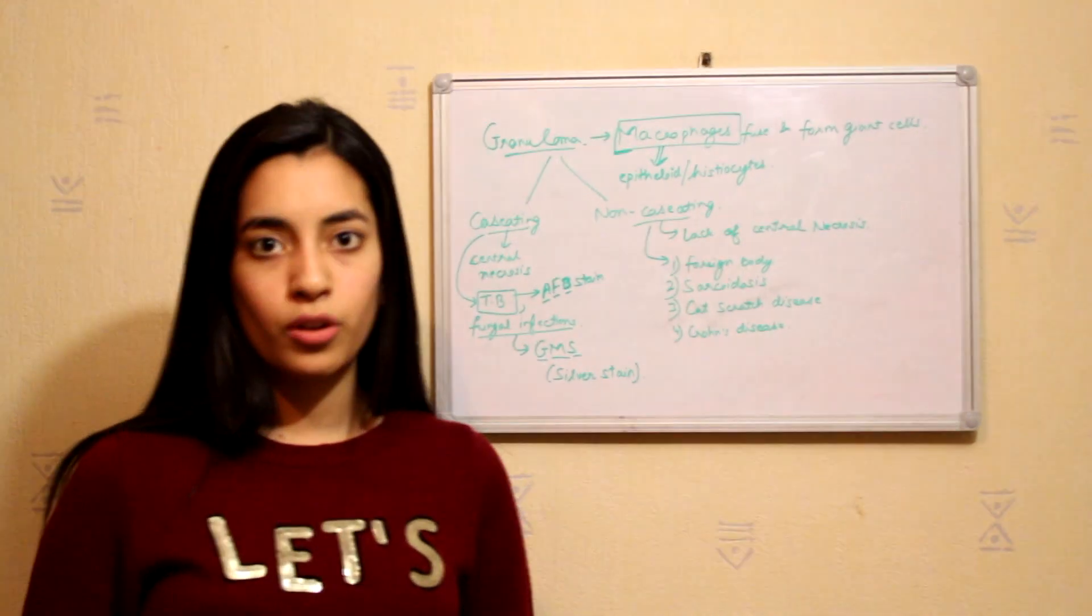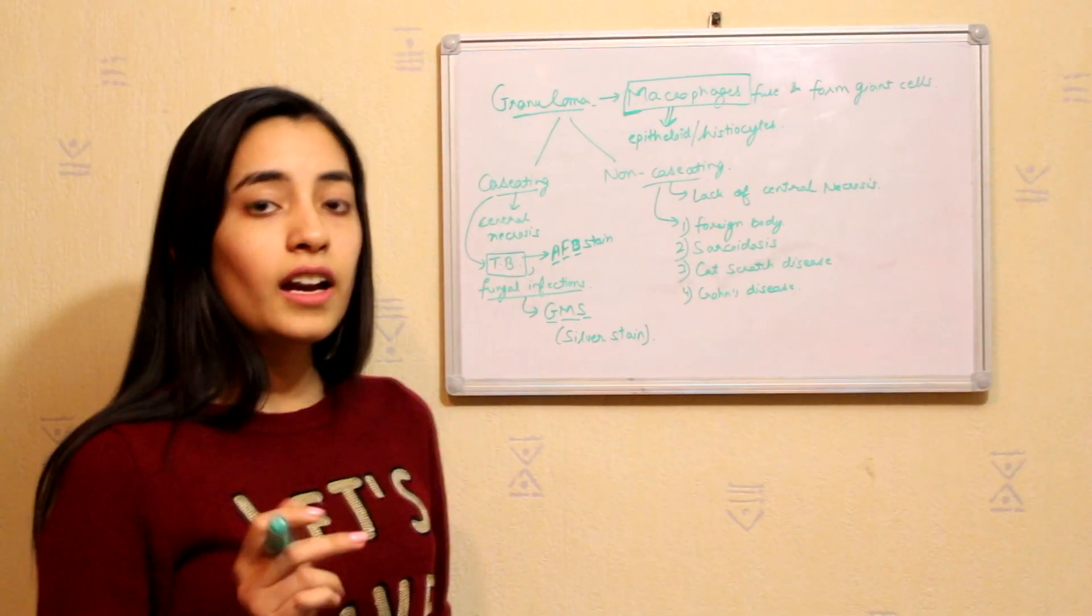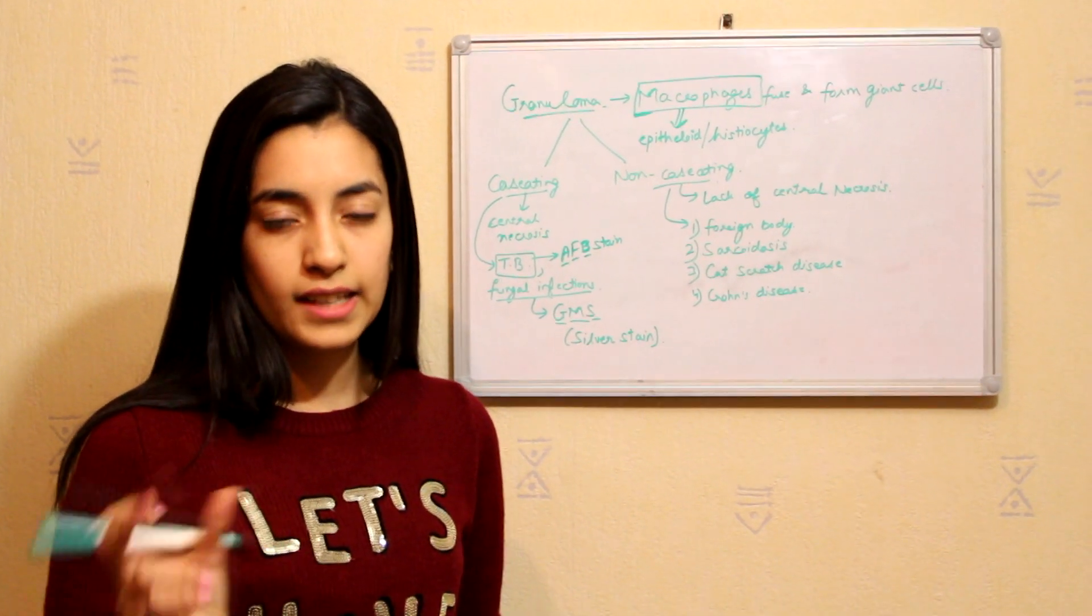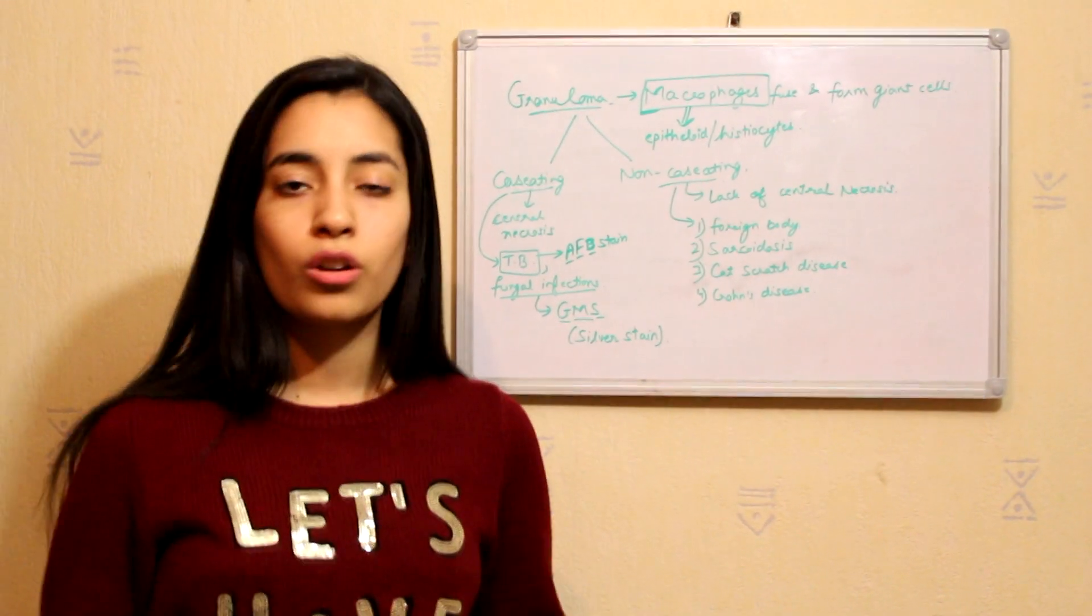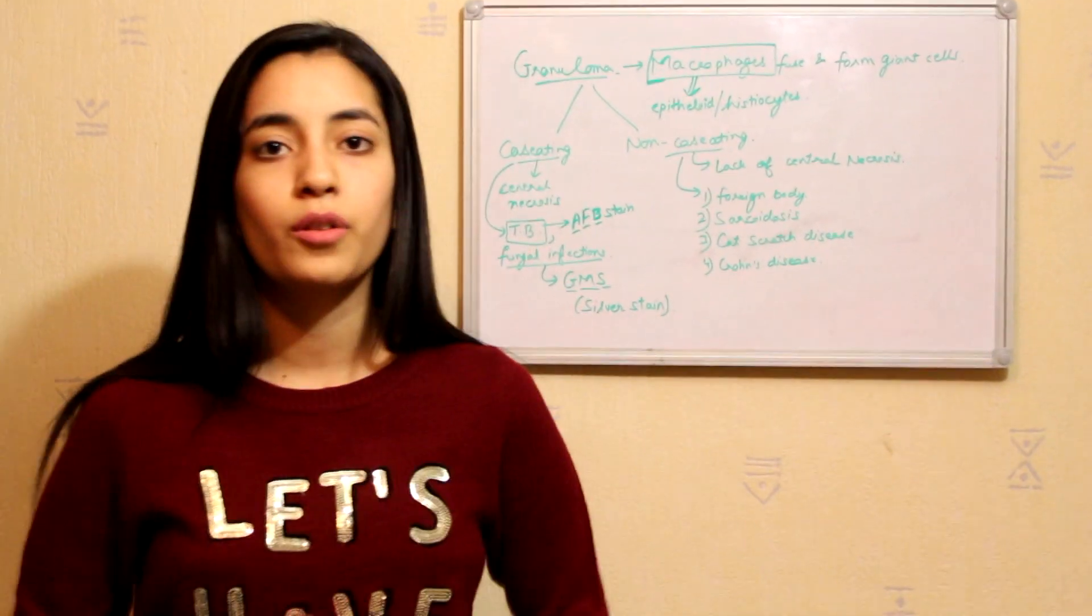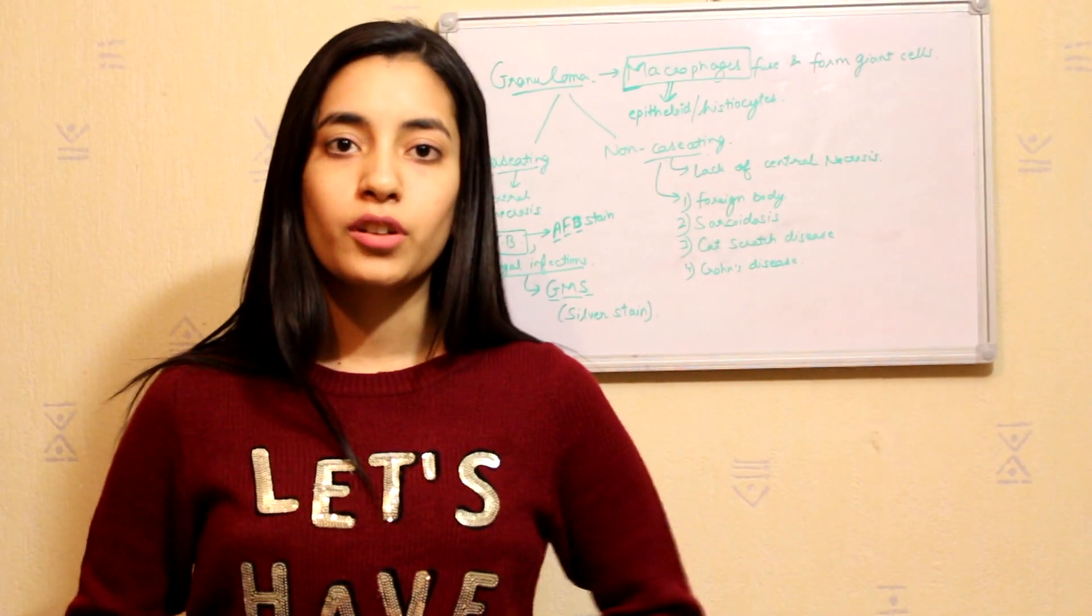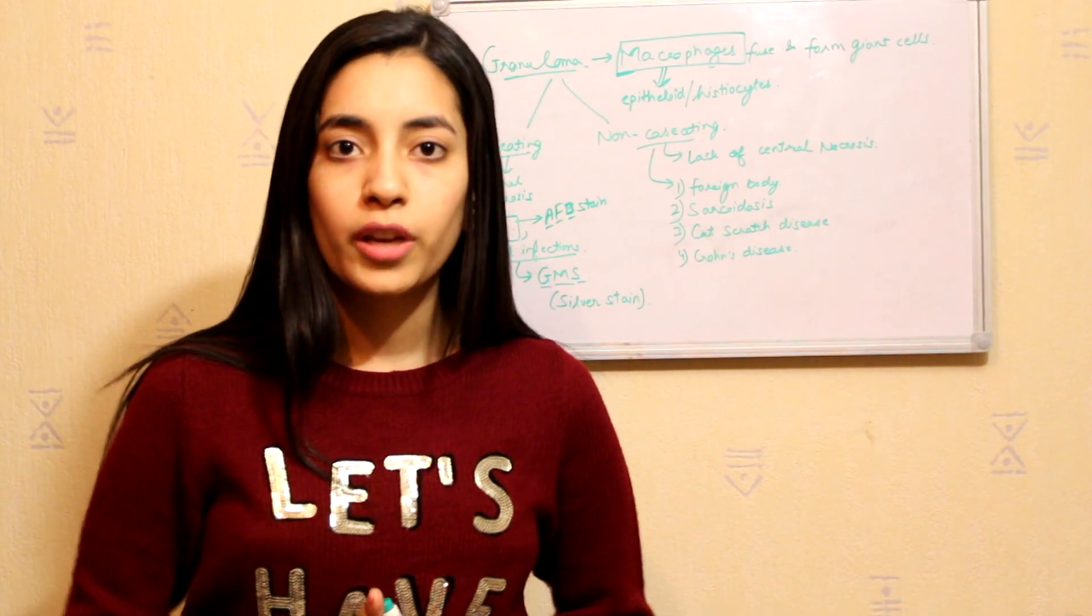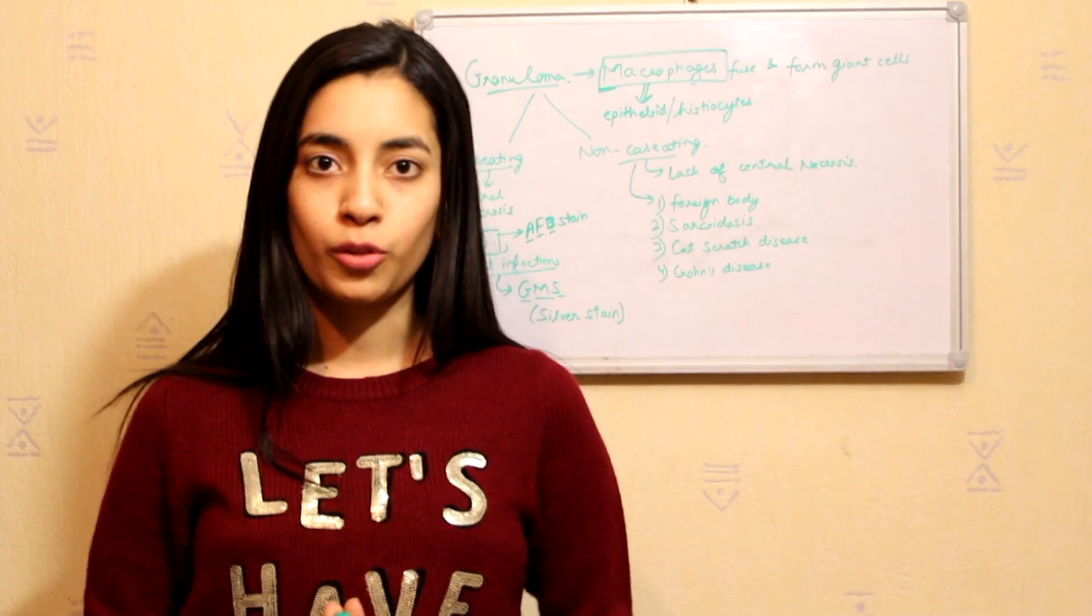Tuberculosis has caseating granuloma. I have discussed this in necrosis and apoptosis video also, that caseating necrosis. Caseating means cheese-like appearance. So whenever there is a word caseating granuloma or necrosis, it is always tuberculosis. So this was all about chronic inflammation. If you have not subscribed to my channel yet, please click on the subscribe button, and also click on that bell icon so that you can get notified when I upload my new videos. Thank you for watching this video. Keep supporting and keep motivating.